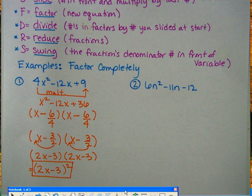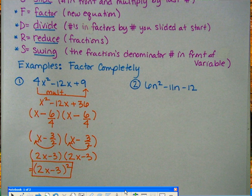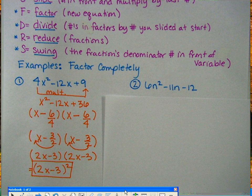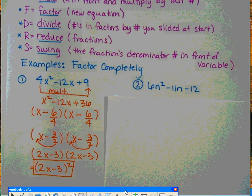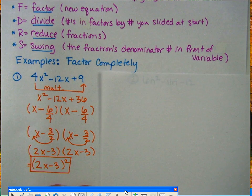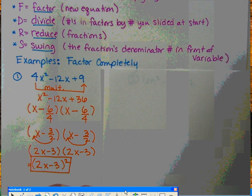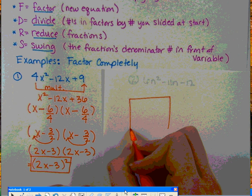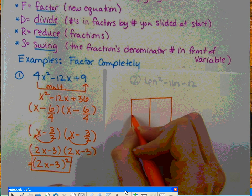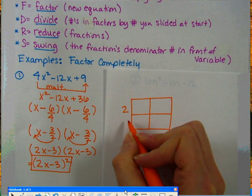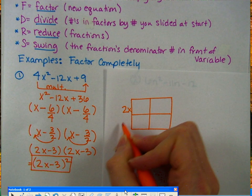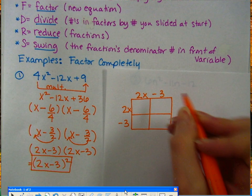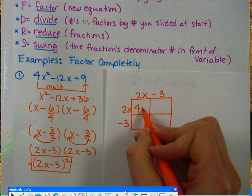Now we can also check this solution by foiling or using the box method is what I like to use. So if we come over here to this side, if I check this, I'm going to go ahead and use the box method because that's what my students have an easier time using. So for this box method, I have 2 and then x - 3 and 2x - 3.